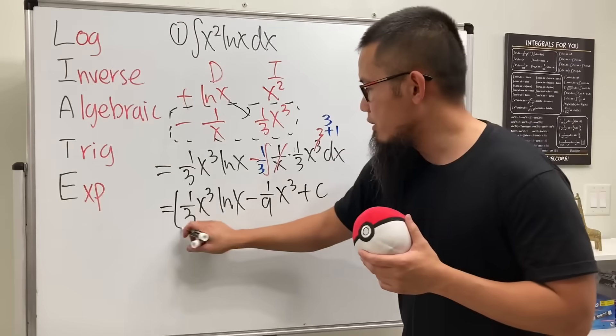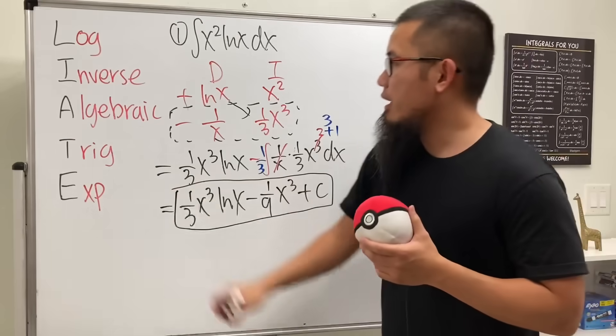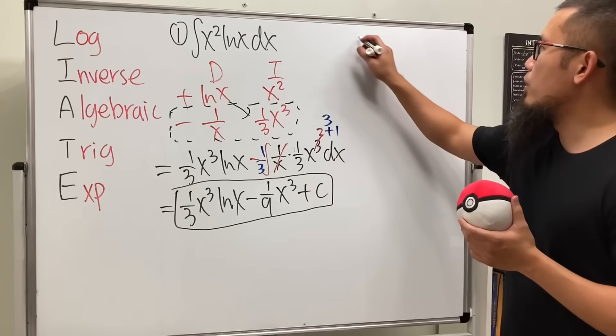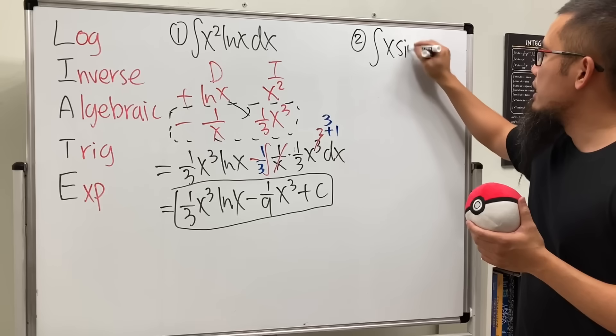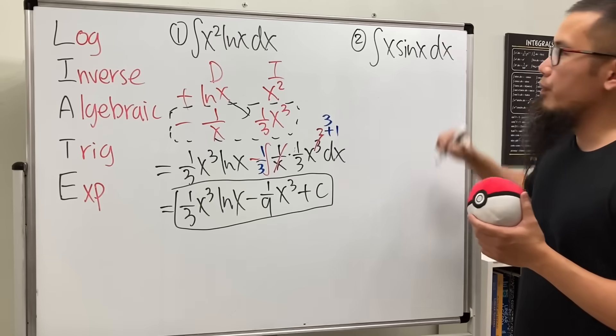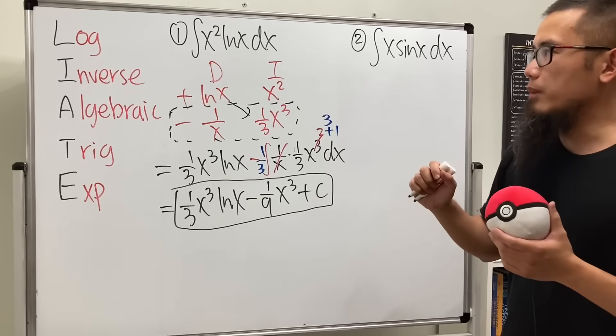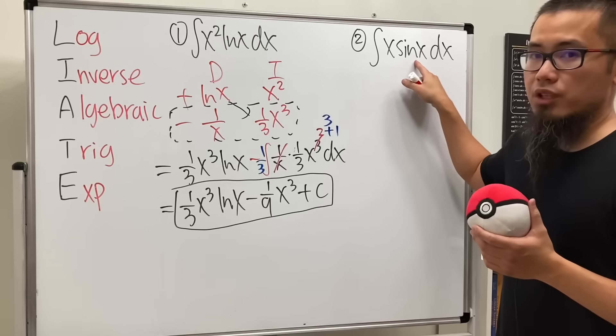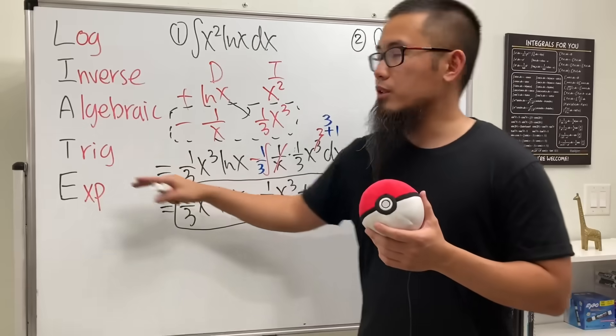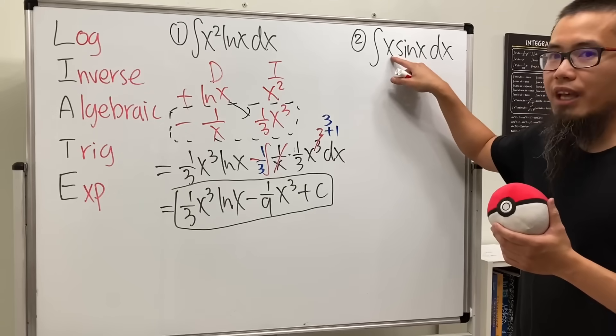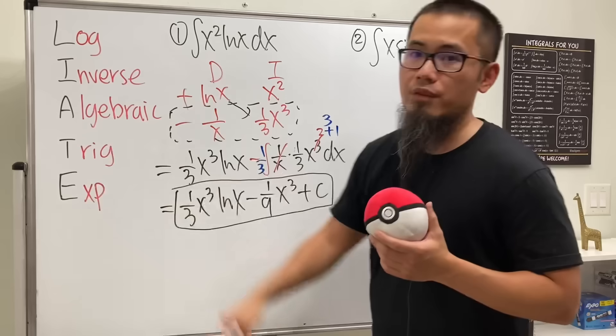And I can also give you guys another example. So if you are looking at the integral of x times sine x instead, well, we don't have the log anymore. We have trig function, but you see it's down here. So that means we should actually choose x to the first power because it's above the trig function.